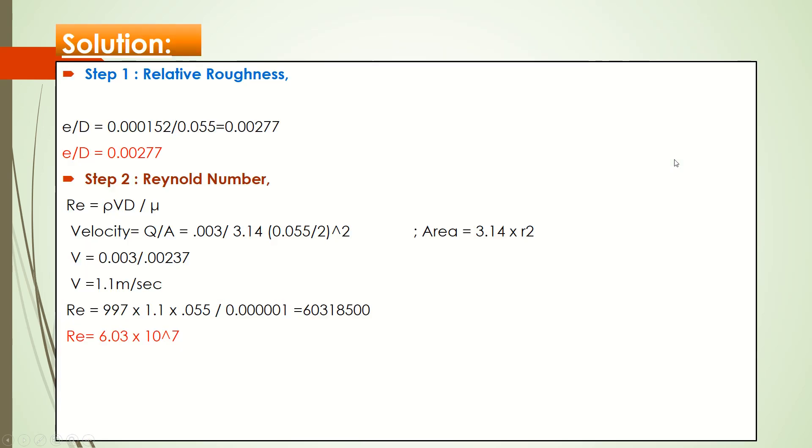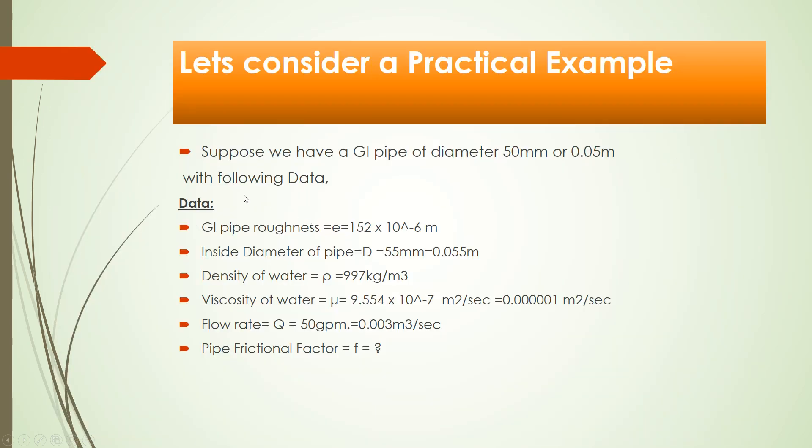GI pipe roughness is 152 × 10^-6 meter. Inside diameter of the pipe, you can easily get by charts available on Google: 55 mm or 0.055 meter. Density of water: 997 kg/m³.